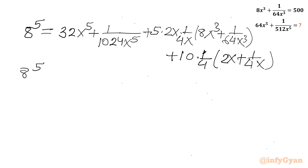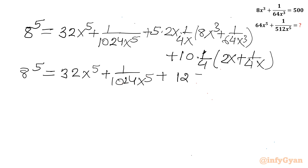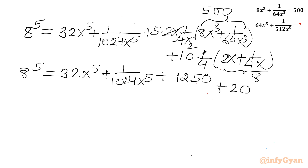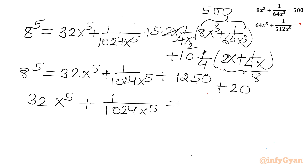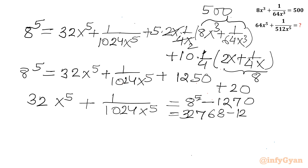So 8⁵ = 32x⁵ + 1/(1024x⁵) + (5/2) × 500 + (10/4) × 8. That gives 32768 = 32x⁵ + 1/(1024x⁵) + 1250 + 20, so 32x⁵ + 1/(1024x⁵) = 32768 - 1270 = 31498.